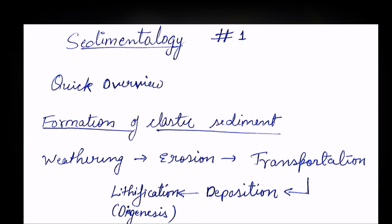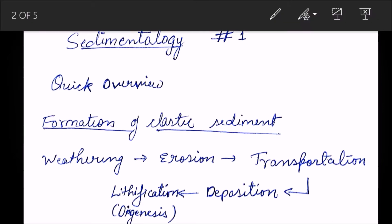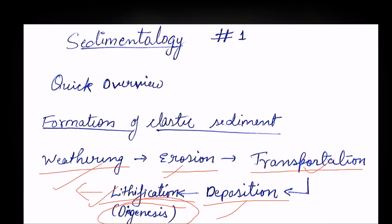First, the formation of clastic sediments takes place in five different steps. First is weathering, then there is erosion, then transportation, then deposition, and then lithification. These five are the essential steps of sedimentation. Lithification is also called diagenesis. After this we get a sedimentary rock.